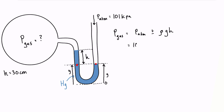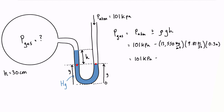So we fill this out: atmospheric pressure is 101 kilopascals, and we're subtracting rho times g times h. That is the density of mercury — 13,550 kilograms per meter cubed — times acceleration due to gravity, 9.81 meters per second squared, times the height of 0.3 meters. Multiplying that out gives 19,939 pascals, or 19.9 kilopascals. So P_gas equals 101 minus 19.9, which is 81.1 kilopascals.